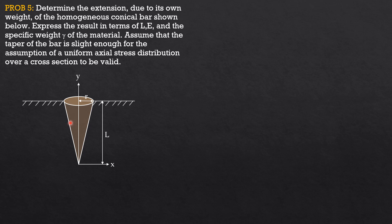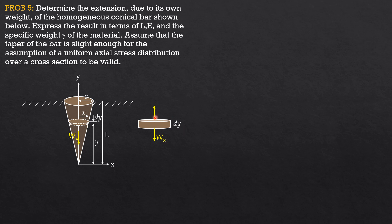The stress is not uniform, so we consider a horizontal strip at distance y from the vertex with thickness dy. Below this strip is the weight of the conical part, which pulls the varying cross-sectional area. We call this W_x: the weight of the conical part below the strip. The tension in the upper surface of this strip equals W_x by equilibrium. The strip has thickness dy, radius x, and the internal force is W_x.